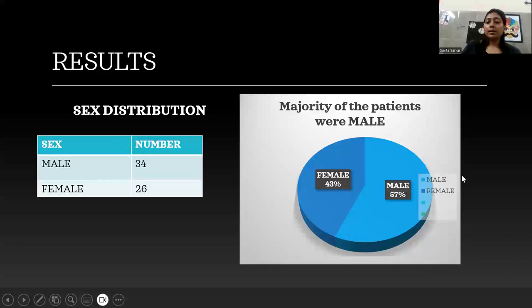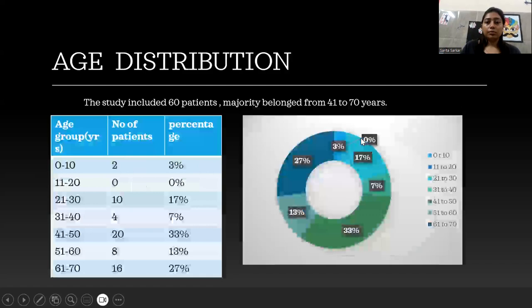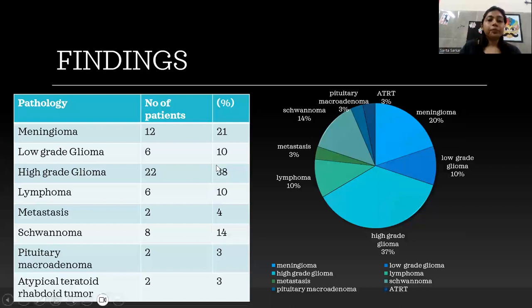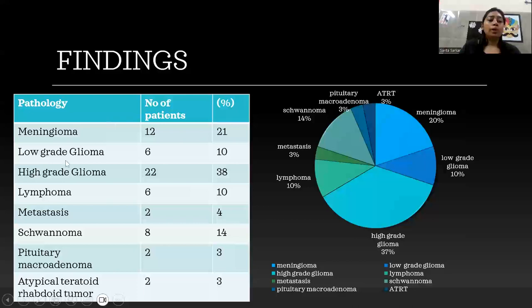Coming to the results, there is a slight male predilection. The study included 60 patients; the majority belonged to the 31 to 70 years age group. In the study, 38% of patients had high-grade glioma, 10% had lymphoma, 4% had metastasis, and 3% had atypical teratoid/rhabdoid tumor. The remaining patients had meningioma, low-grade glioma, schwannoma, and pituitary microadenoma.